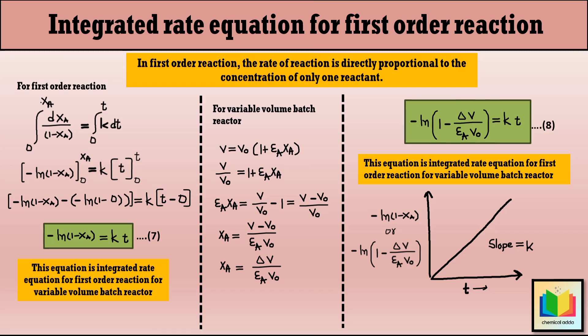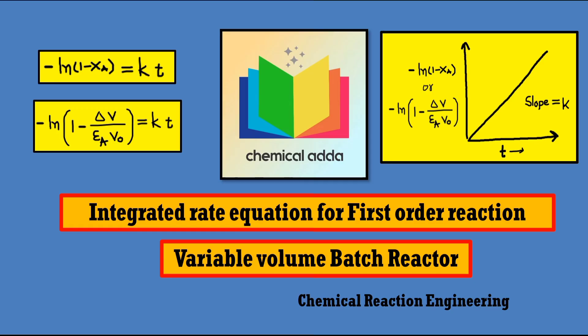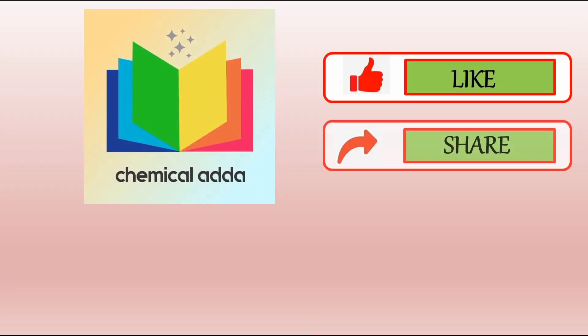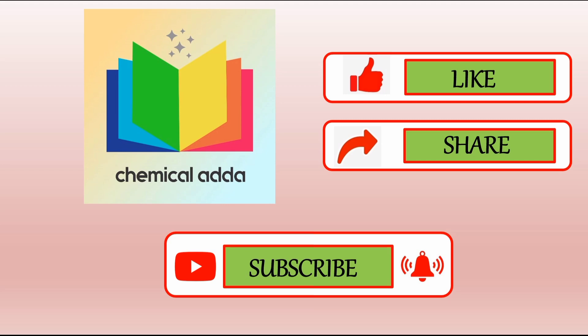That's all for today's video. I hope you found this explanation of the integrated rate equation for a first-order reaction in a variable volume batch reactor helpful. If you haven't watched the previous video on the integrated rate equation for a zero-order reaction in a variable volume batch reactor, make sure to check it out — the link is in the description box below. Don't forget to like, share, and subscribe for more chemical engineering content, and feel free to comment below for content suggestions. Stay tuned and I'll see you in the next video.